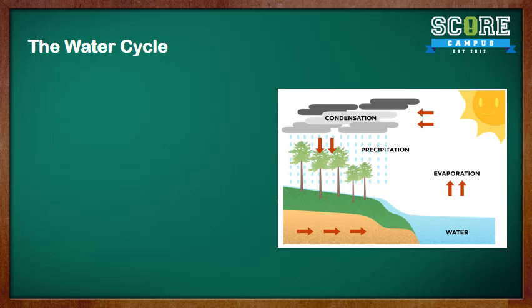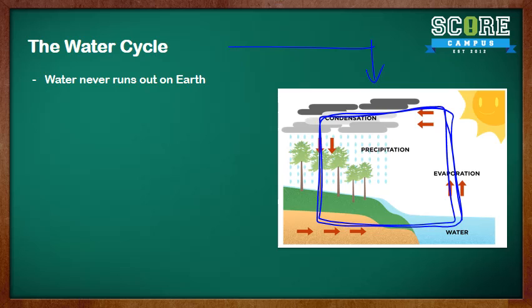Let's look at the water cycle, which is what you see here. Water never runs out on Earth because of this continuous movement of water, which is what we call the water cycle.